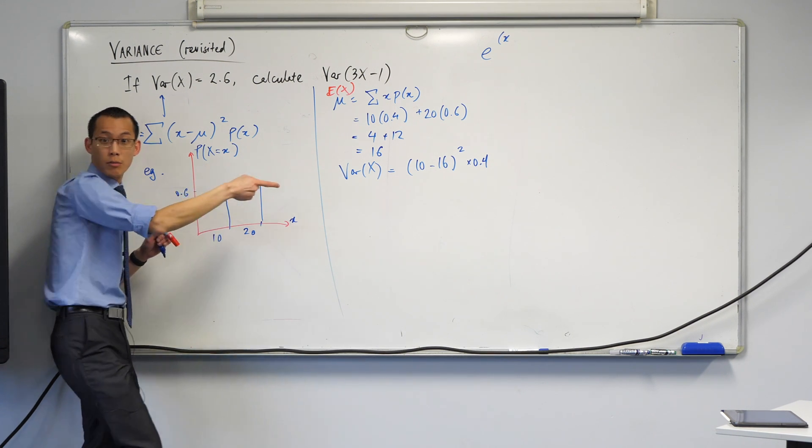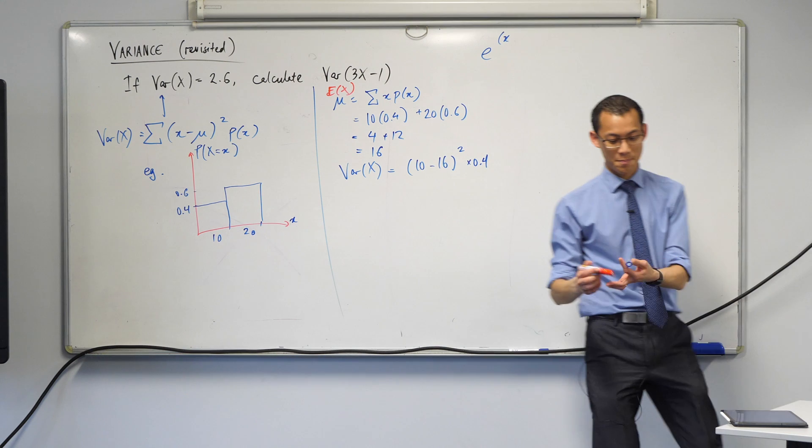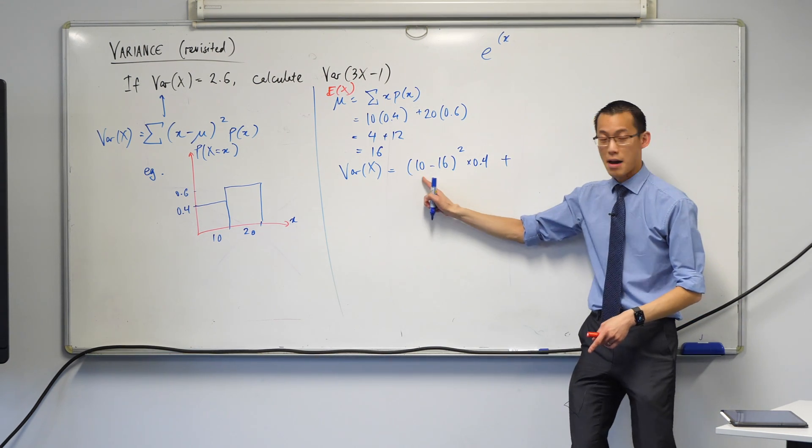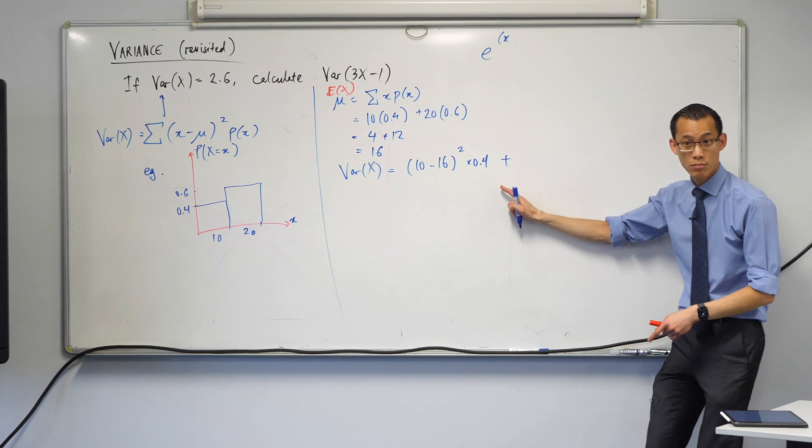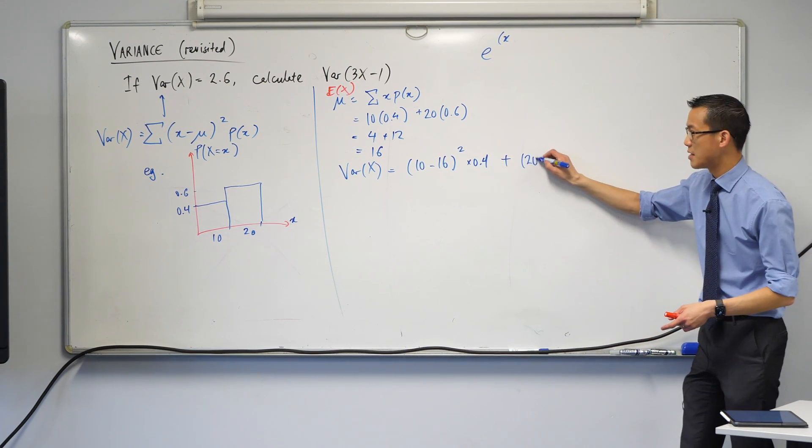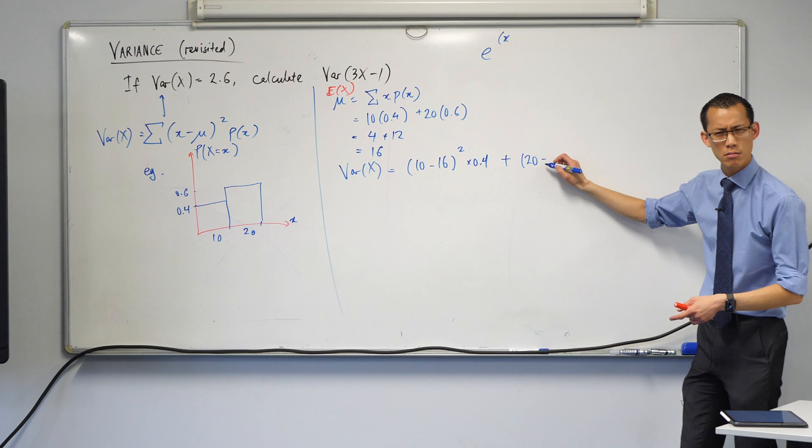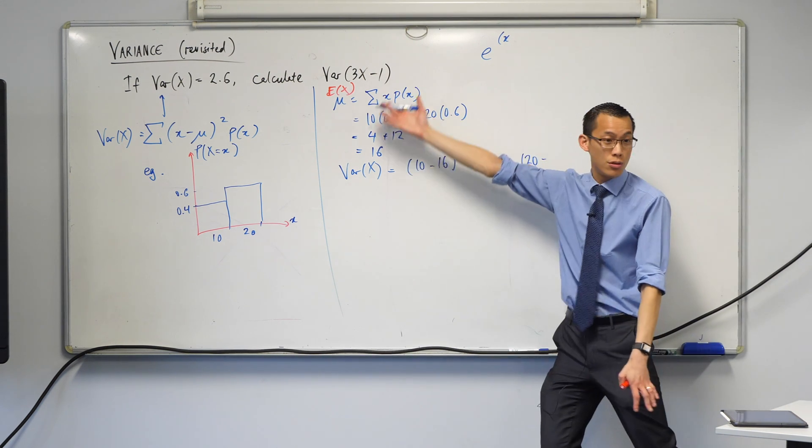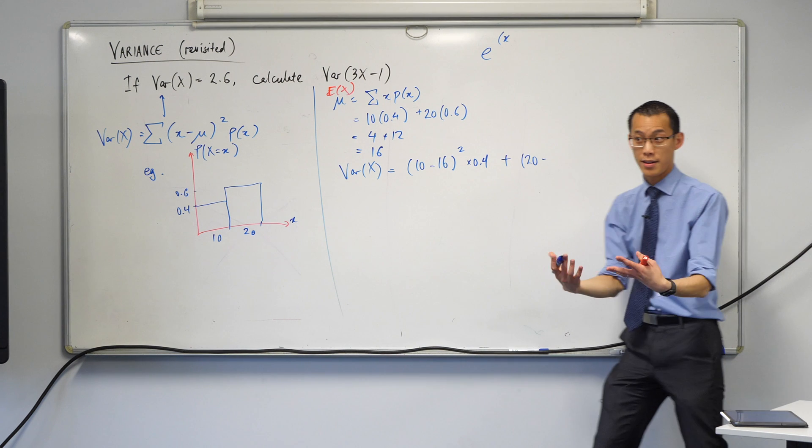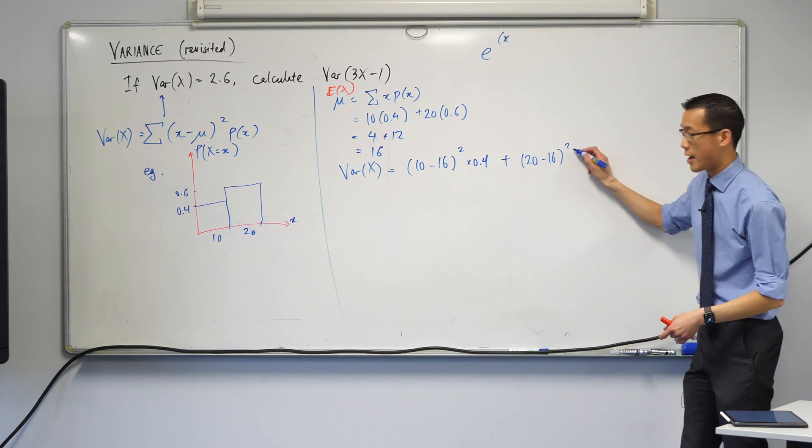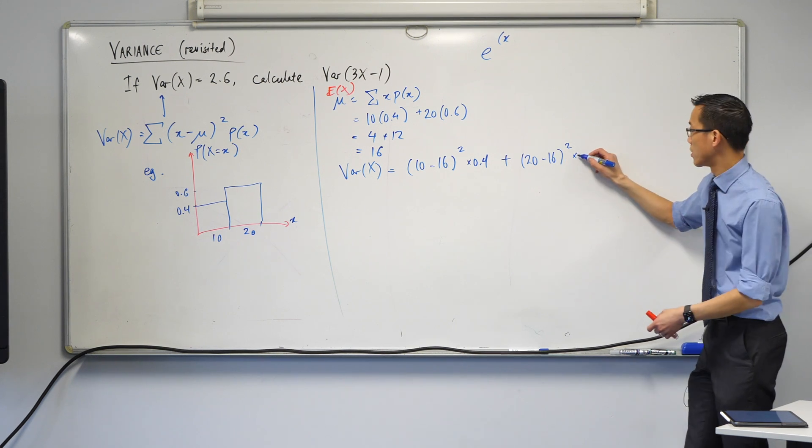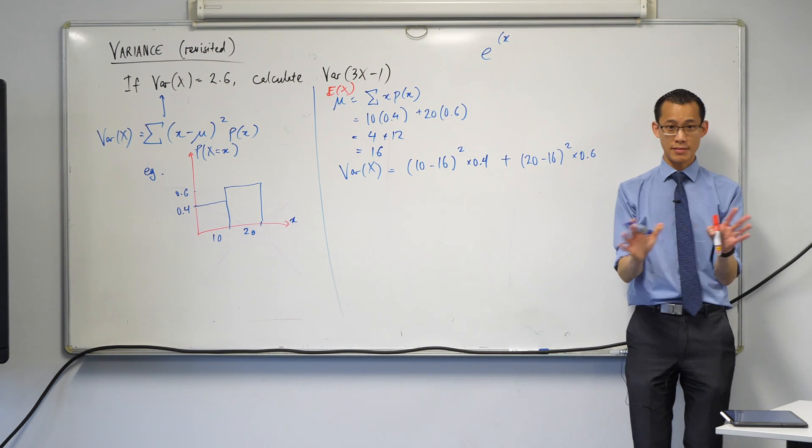I'm not finished. I've only done one thing. I've got to do the other one. What's the other one going to give me? Plus. I've done one of the x minus mu squared times p(x). 20 minus... 20 minus what? Think, think, think. It's mu again. It's the same mu. Mu's always the same all the way through. I'm always comparing to the mean. So that'll be minus 16. Then I square, and then I multiply by this probability, which is 0.6. Happy so far?